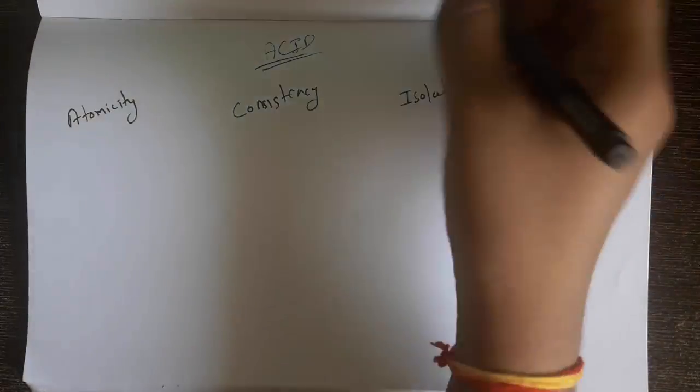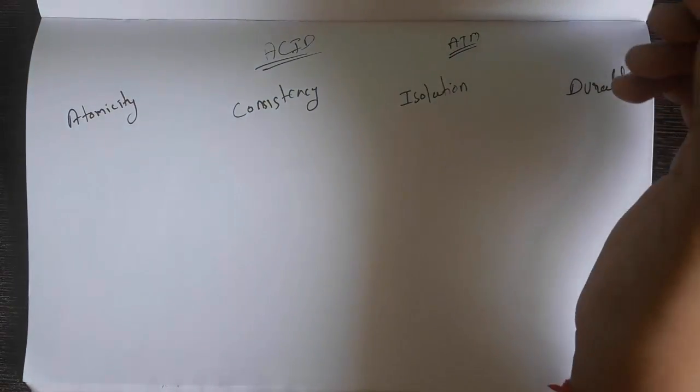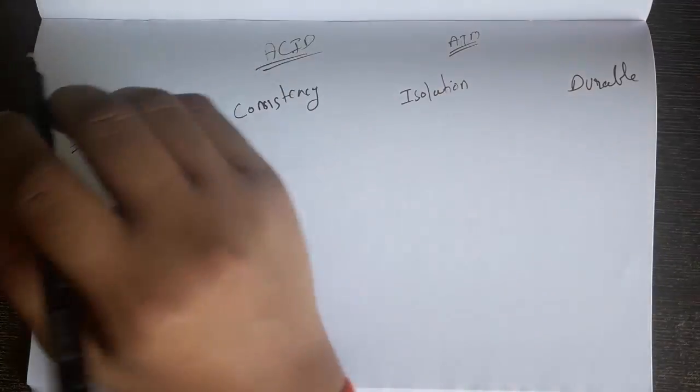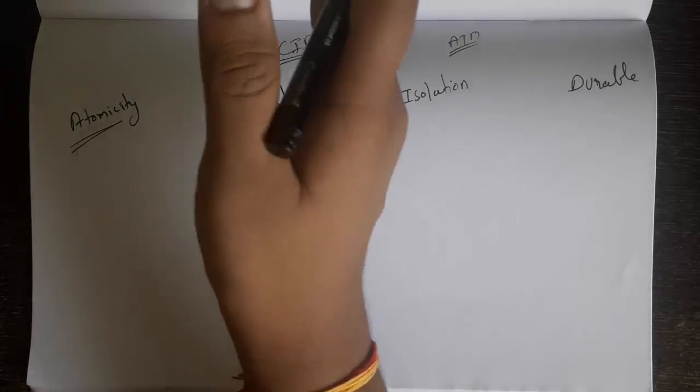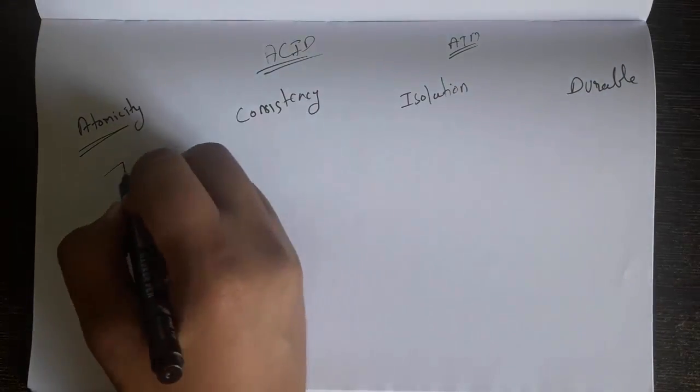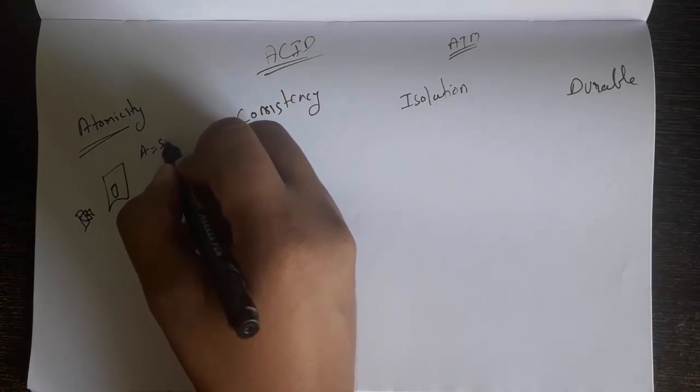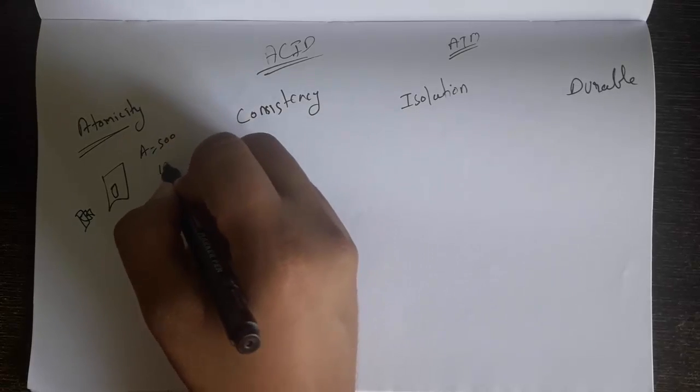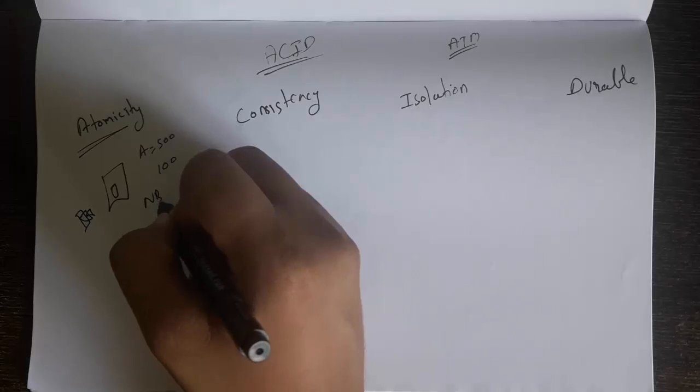I am going to take an example of an ATM machine, an automated teller machine where you withdraw money. Atomicity means the database should only be updated if the transaction is successful. For example, you removed money from the ATM. Suppose my account is 500 rupees and I have removed 100 rupees.